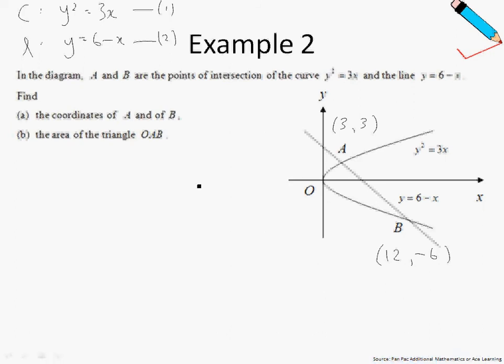Moving on, in part B, I'm asked to find the area of triangle OAB. So let me just mark out the coordinates of O, which is just the point of origin, which is 0, 0.